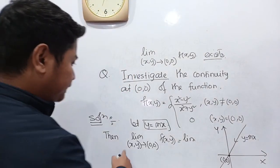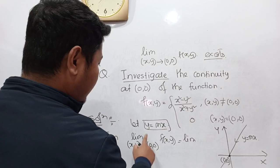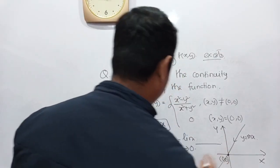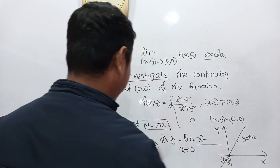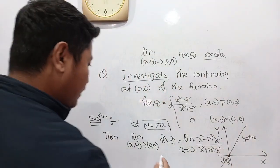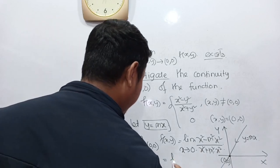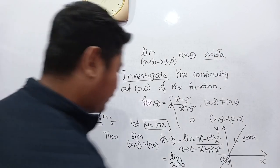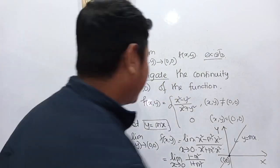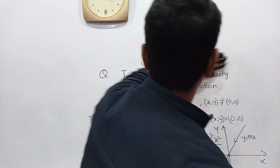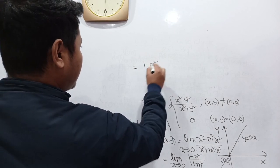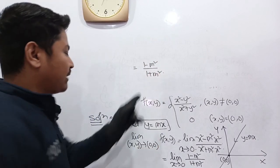So the limit as (x,y)→(0,0) along y = mx gives (1 − m²)/(1 + m²). This value is dependent on m. For different values of m, the limit gives different values.